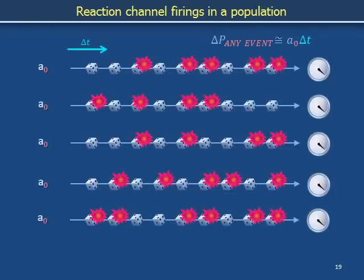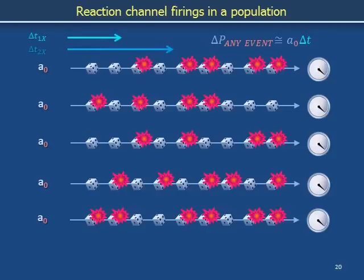Not only does the time rate A0 describe the temporal density of reactions in a single timeline viewed left to right, A0 also describes the density of reactions in a single time interval viewed top to bottom. When A0 increases, so too does the number of pink reactions produced by all the initial dice rolls of all the cells in a population. For a short time interval, the fraction of the population that has produced a reaction is proportional to A0. Doubling the interval delta T doubles the number of dice rolls it embraces, including roughly doubling the subset that productively lead to pink reactions.